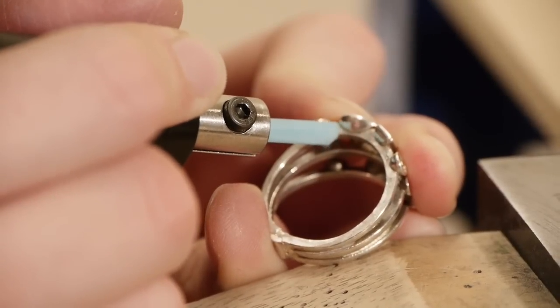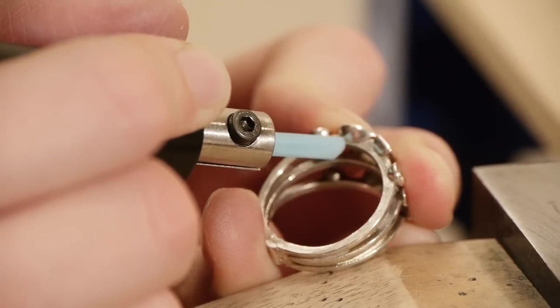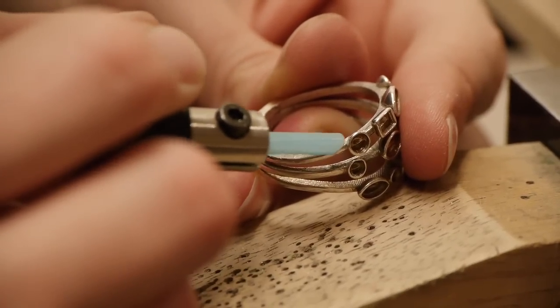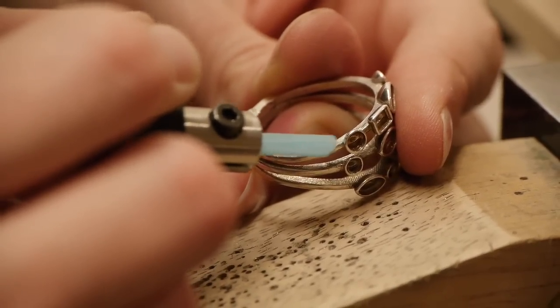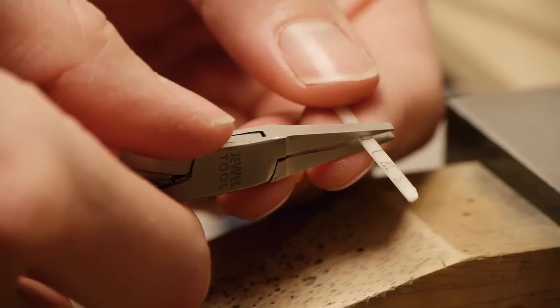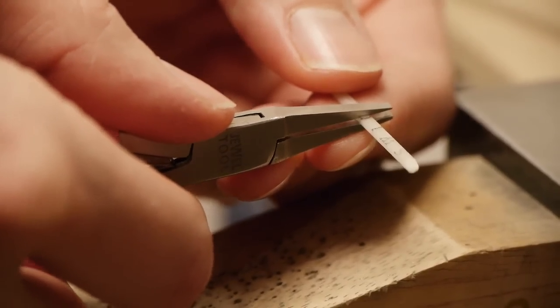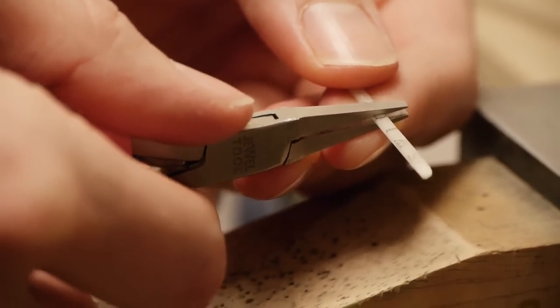So this is the 800 grit blue ultrafine ceramic stone. Coarser grits of ultrafine ceramics are available and also diamond grits. I'm just using a pair of parallel pliers, pretty much any will do. And this just breaks the stone where you want it to break.